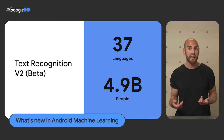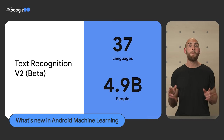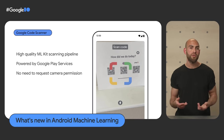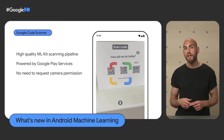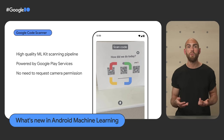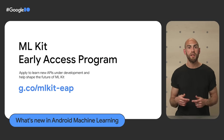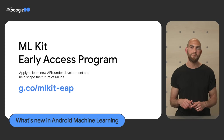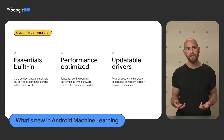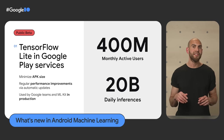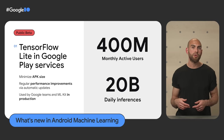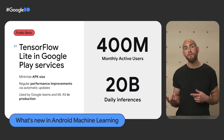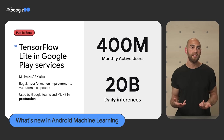ML Kit's text recognition API now supports 37 languages representing 4.9 billion people worldwide. We're also launching a brand new Google Code Scanner feature in Google Play services, making it easy to scan barcodes, QR codes, and other codes with no camera permission needed. For custom ML, we're introducing new APIs for hardware acceleration and updatable drivers, and TensorFlow Lite runtime is now available via Google Play services — allowing you to reduce your APK size and get easier access to regular performance updates.